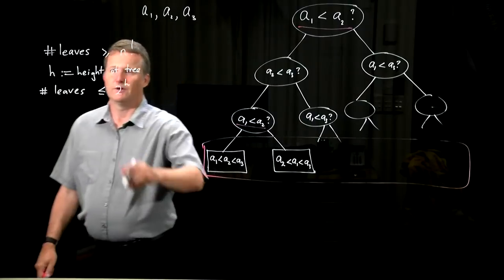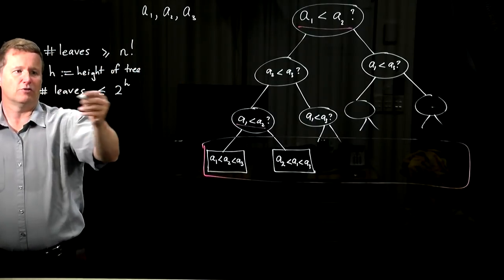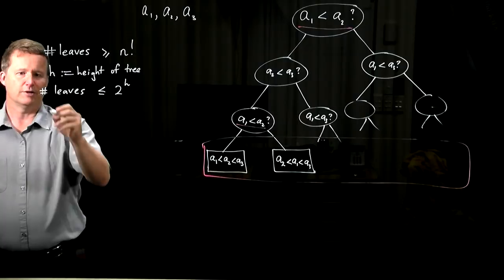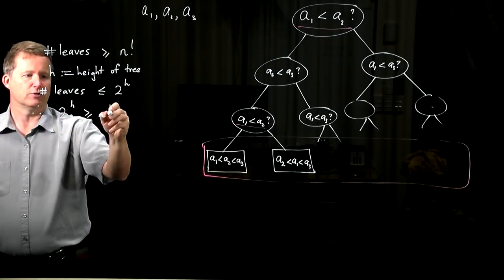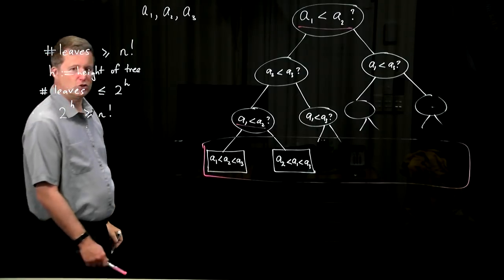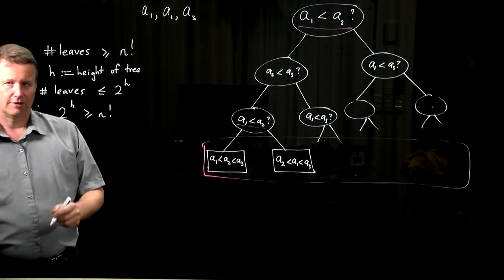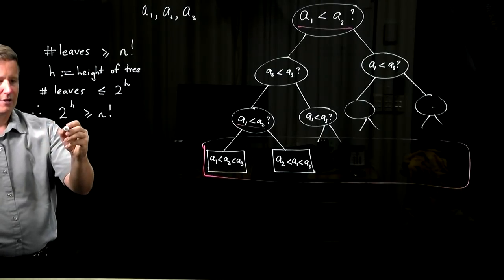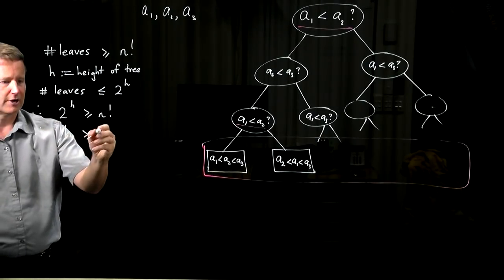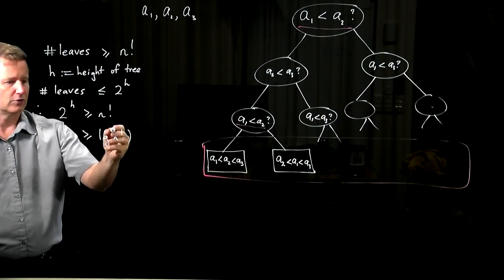Now, we have two inequalities involving the number of leaves. If we combine those, we get that 2 to the h must be bigger than or equal to n factorial. So h can't be too small. Now if we take the binary logarithm of that, we get that h is greater than or equal to the binary log of n factorial.